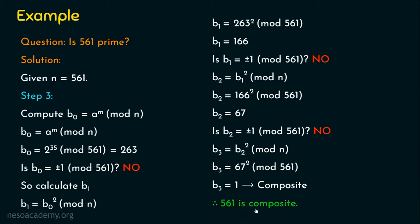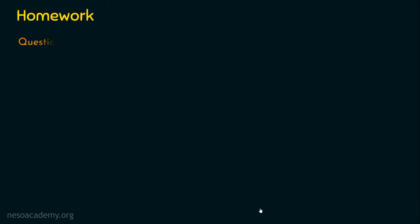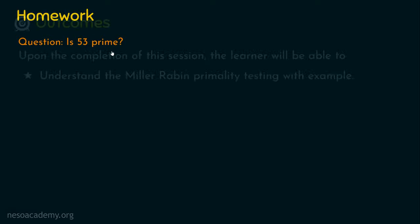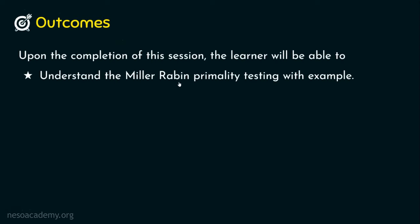Please remember: Fermat's primality test gave the result for 561 as prime, but 561 is actually a composite number — and this algorithm correctly identifies it. Before we sign out, here is the homework question: is 53 prime? Apply the Miller-Robin primality test and post your answers in the comment section. I hope you now understand the Miller-Robin primality test with example. Thank you for watching, and I'll see you in the next lecture.